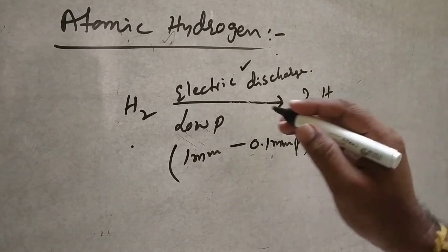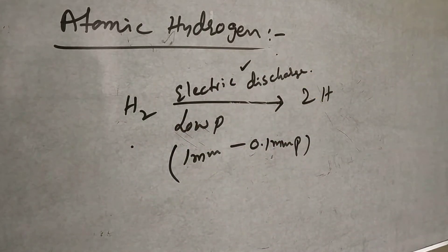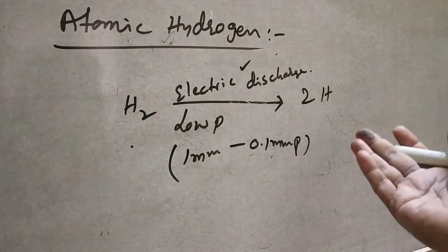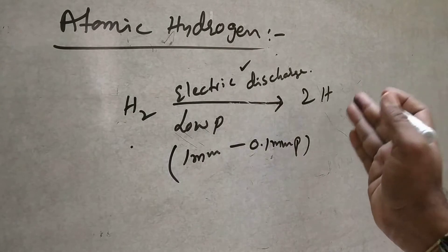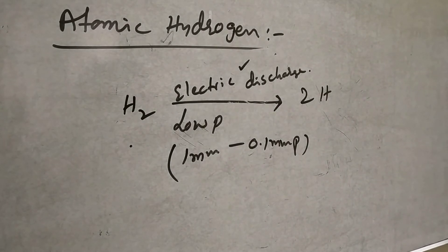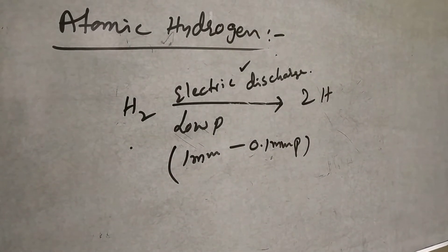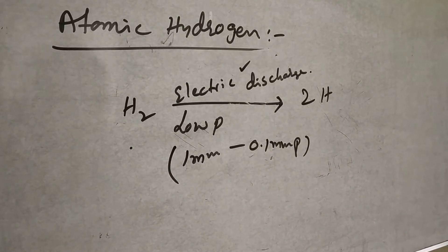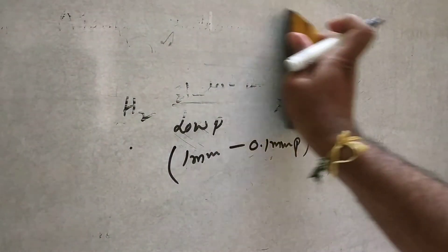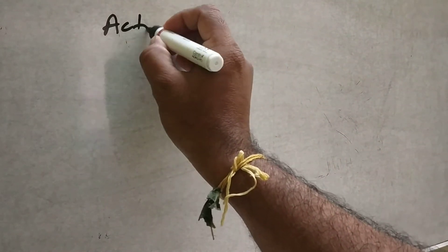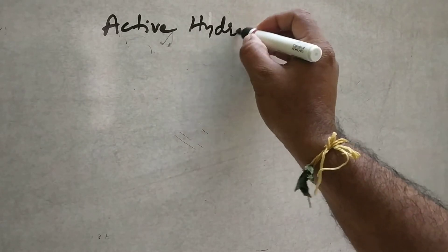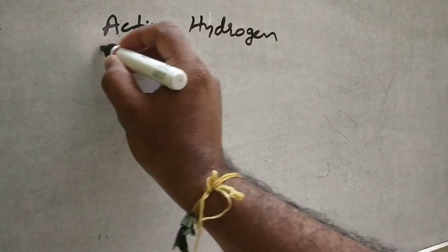A certain amount of energy is required for the cleavage of the molecular hydrogen bond — converting molecular hydrogen into Atomic Hydrogen requires some energy. Now, what is Active Hydrogen? In a compound, hydrogen plays a major role — we can call it Active Hydrogen.